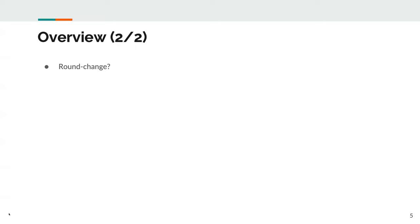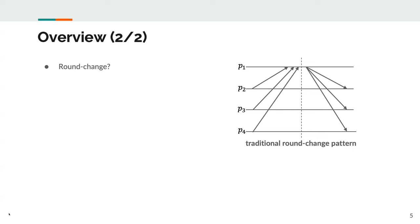Usually, round change sub-protocols follow this pattern: all processes send their estimate of a value that should be decided to the leader of the next round, and the leader analyzes the received values and chooses one to propose. The main distinguishing feature of Tendermint is that it does not have an explicit round change sub-protocol. To allow this, Tendermint builds upon the following insight: if a correct process P has received messages that allow it to estimate value V as a potential decision value, due to the guarantees of the gossip primitive, the new leader L will receive the exact same messages without P explicitly sending them to L. Therefore, gossip allows Tendermint not to have an explicit round change sub-protocol.